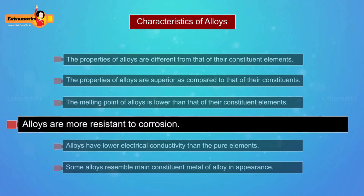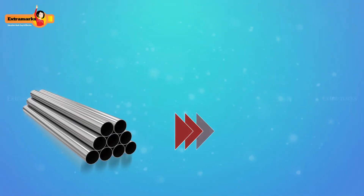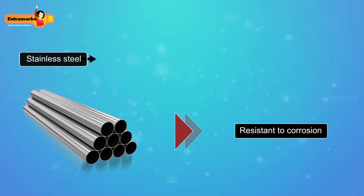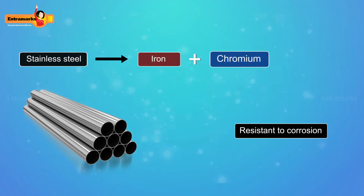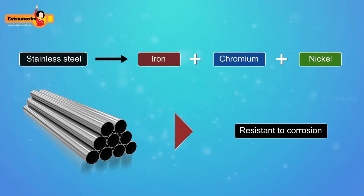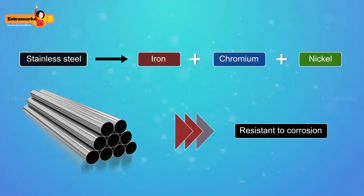Alloys are more resistant to corrosion. For example, stainless steel, an alloy of iron, chromium, and nickel, is more resistant to corrosion.